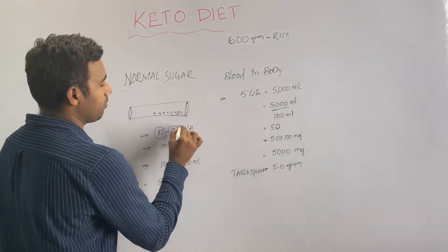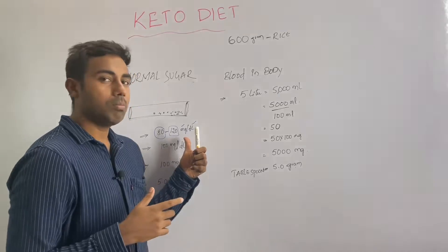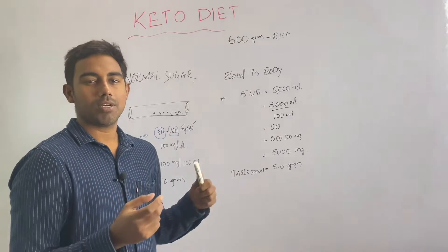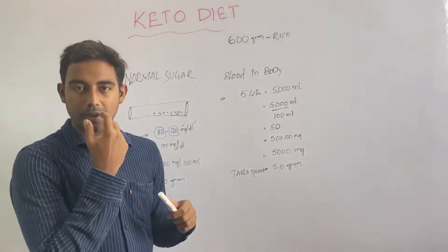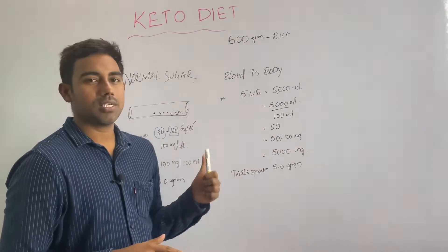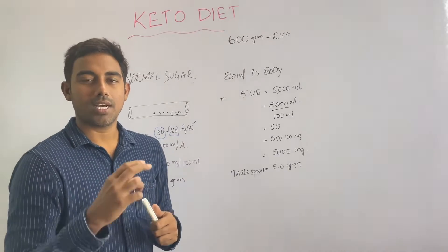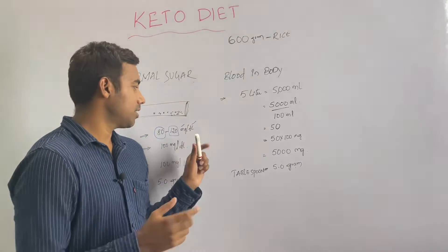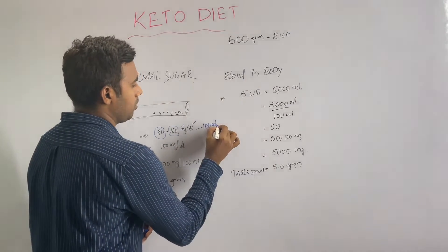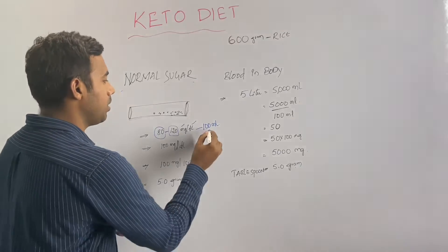The reading is in mg per deciliter. Mg means milligrams, and DL means deciliter. Deciliter means 100 ml.